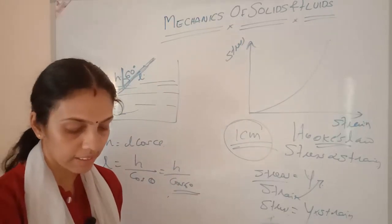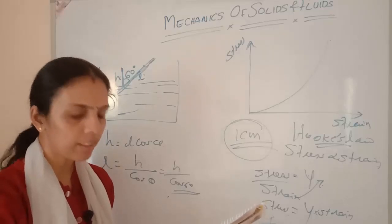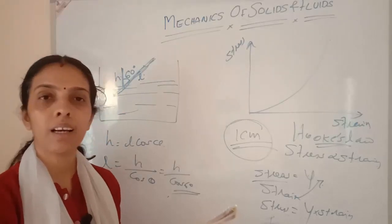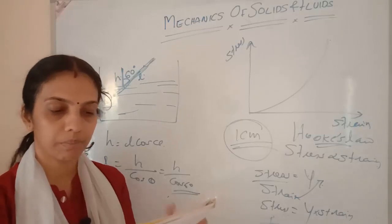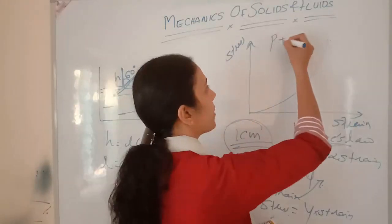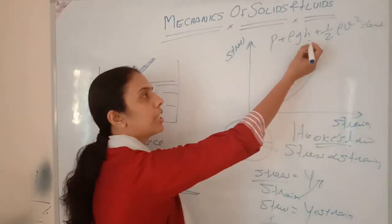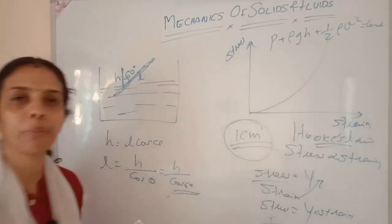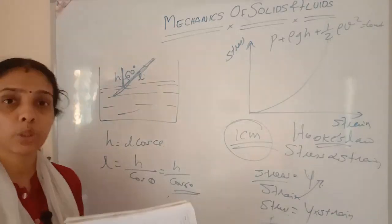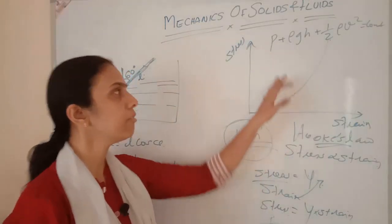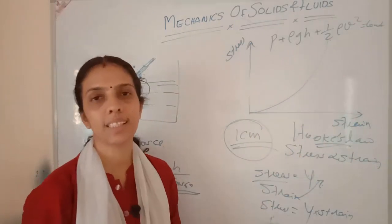The law of conservation of energy is a universal law. Which theorem gives conservation of energy for a flowing liquid? Bernoulli's theorem. State and prove Bernoulli's theorem: P + ρgh + ½ρv² = constant. The sum of pressure energy, potential energy per unit volume, and kinetic energy per unit volume remains constant for an incompressible, streamlined fluid.